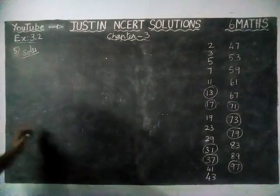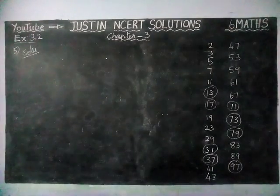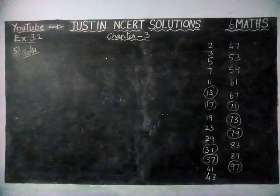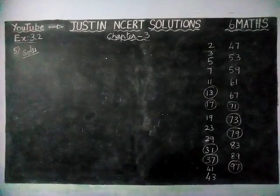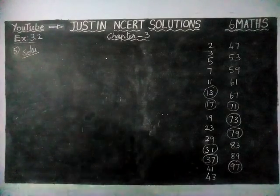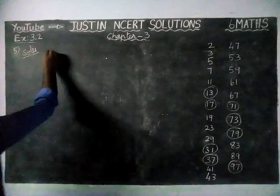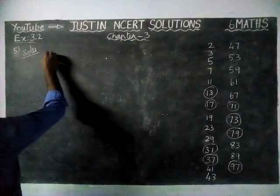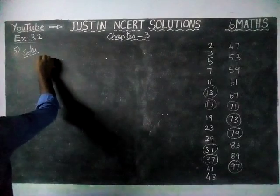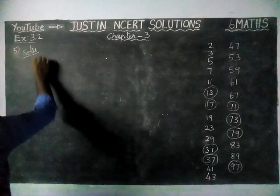Here, we are going to write the greatest prime number between 1 and 10. Between 1 and 10, we are going to write all the prime numbers.